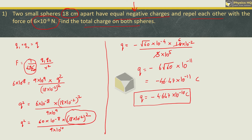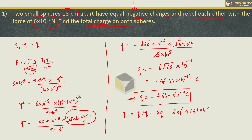Now finally we are supposed to find out what is the total charge on both the spheres. The total charge will be Q plus Q, or 2 times Q. This is 2 into minus 4.647×10⁻¹⁰. So the total charge is 9.294×10⁻¹⁰ coulomb.